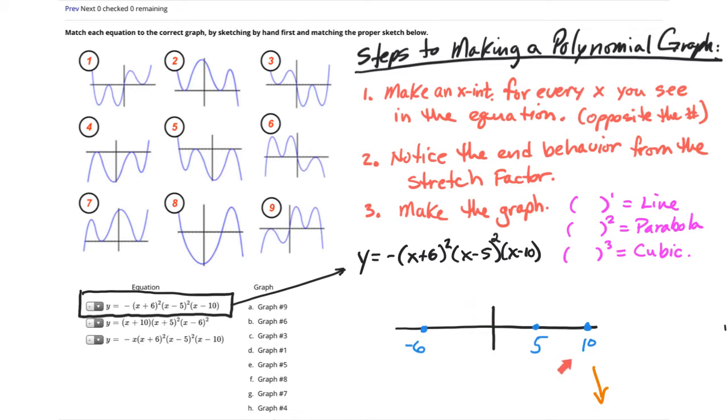Now the first one I'm going to look at here is what parentheses makes the root of 10? That's this one. And that 10 is to the first power, so I want to make a line. So I'm going to make my line going through that by going up to the 10 and straight through it.